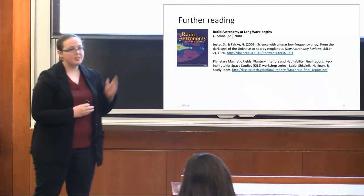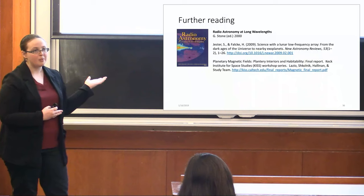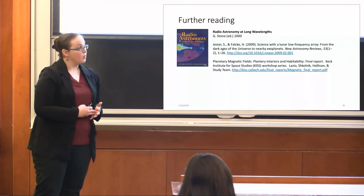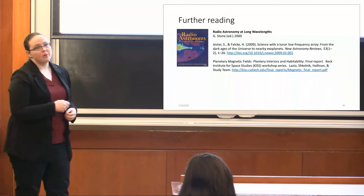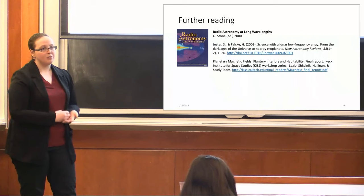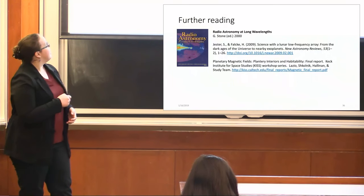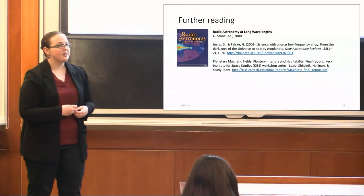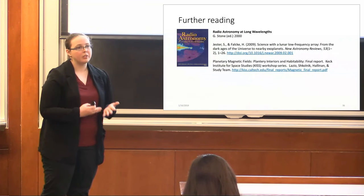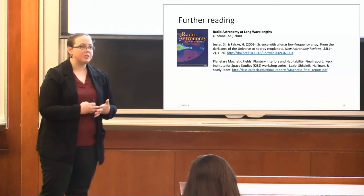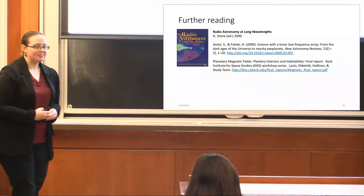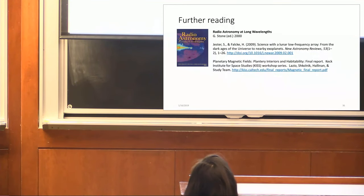So, I will leave this up while I take questions. Here's some further reading if you're interested in any of these topics. This is a phenomenal book that gives a great overview of a lot of the science cases for low-frequency observations. This is the review paper that I mentioned with the requirements for all the various science cases in terms of angular resolution and frequency and sensitivity and so on. And this is a report that really dives into the case for looking for and studying exoplanetary magnetospheres. What are we really going to learn? What is it going to tell us about habitability for these planets? And so on. So, with that, I will stop and take questions. Thank you.